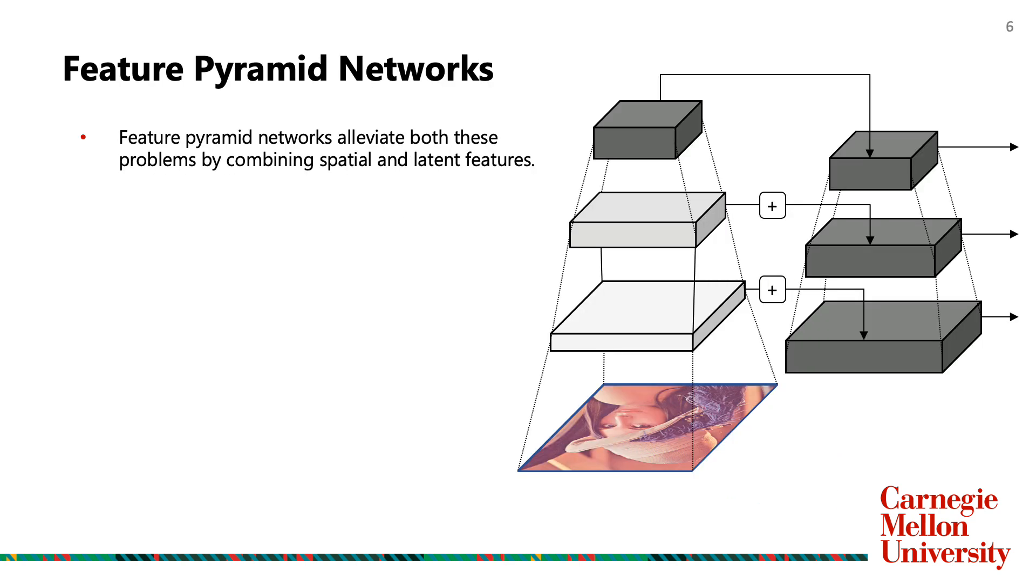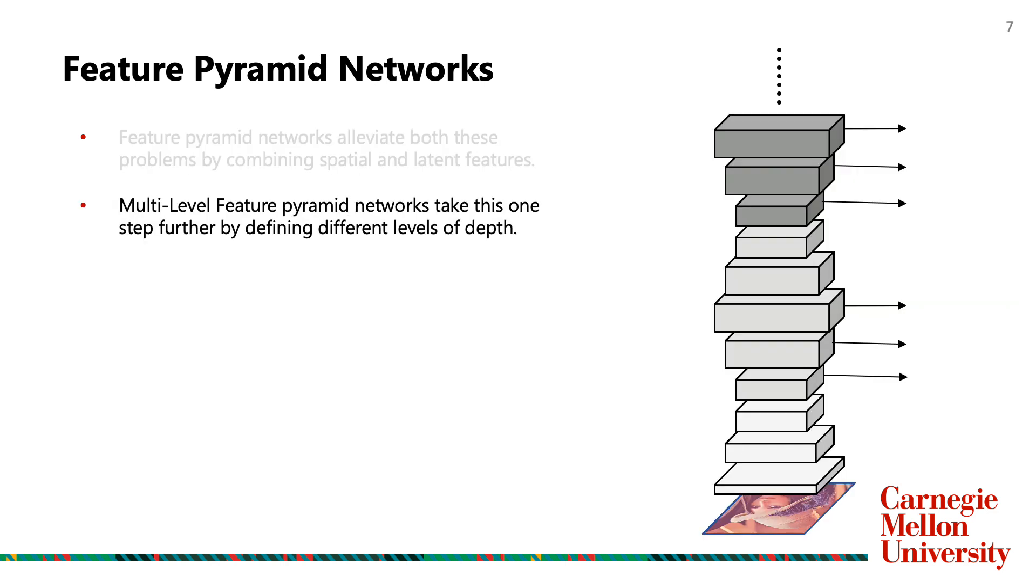We have used ResNet-101 as the backbone to our model. Anchor-free detectors tend to suffer from poor recall values, thus we have used feature pyramid networks to eliminate this issue. We generate semantic features from the backbone and then upsample and recombine them to get back resolution. Multi-level feature pyramid networks take this one step further with different levels of depth. Semantic features are extracted at different levels and then recombined and upsampled to generate dense semantic features while retaining resolution.